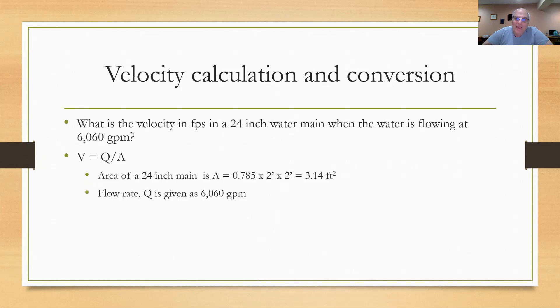For the formula V equals Q over A, the area of the 24-inch main can be calculated as 0.785 times the diameter squared equals 3.14 square feet. The flow rate is given as 6060 gallons per minute, not cubic feet. When I set up the equation and put 6060 gallons per minute divided by 3.14 square feet, that's not going to work. You got to change the gallons per minute or the square feet to make them match.